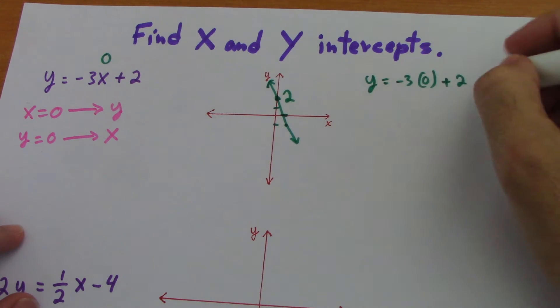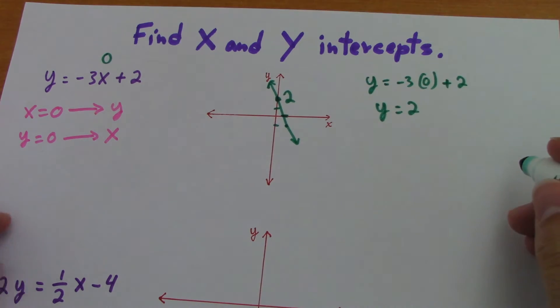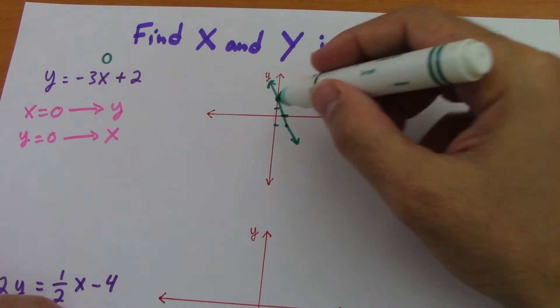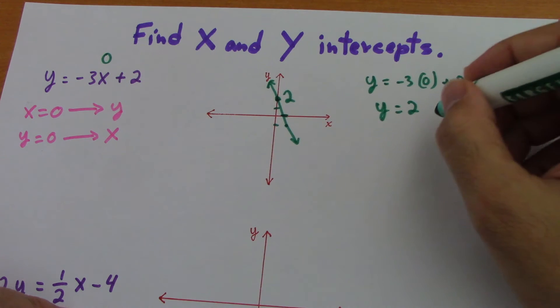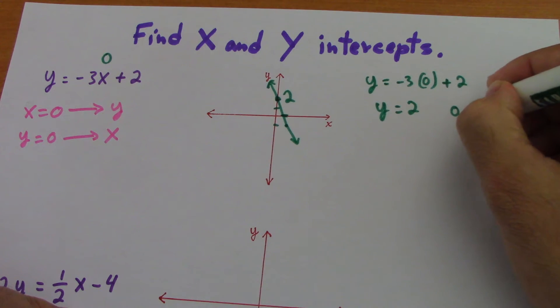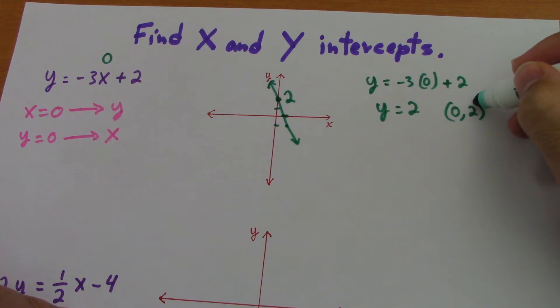This is 0, so y equals 2. So the y intercept is here in 2. The point is 0, 2. That's the point. The y is 2, the x is 0.